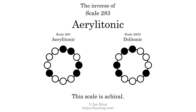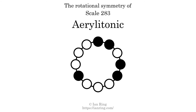The inverse of a scale is a mirror image — it is what you get when the sequence of intervals is reversed. The inverse of this scale is scale 2833, also known as Dolatonic. This scale is achiral, since it can transform into its own reflection by a rotational transformation. This scale has no rotational symmetry.